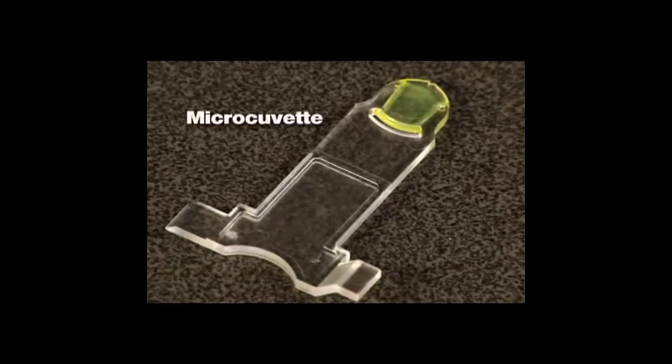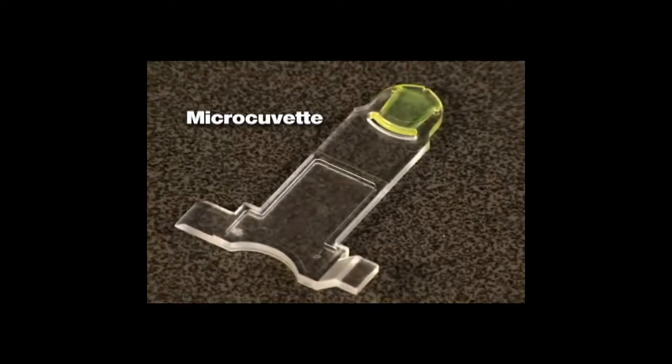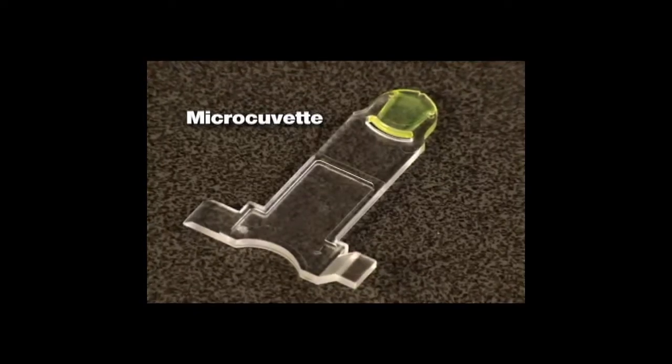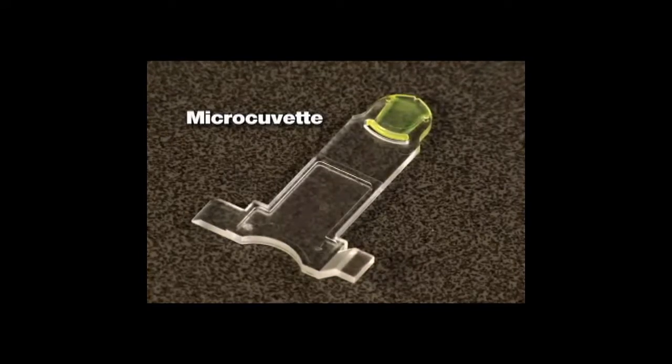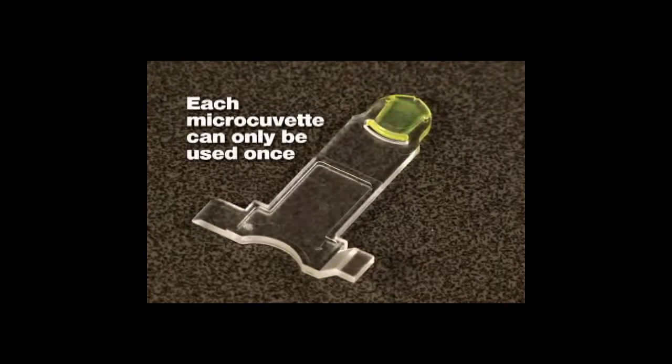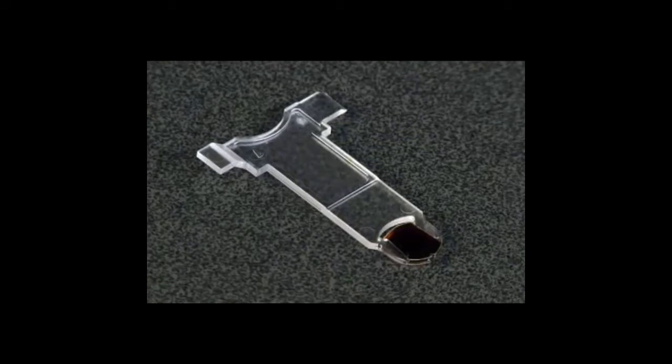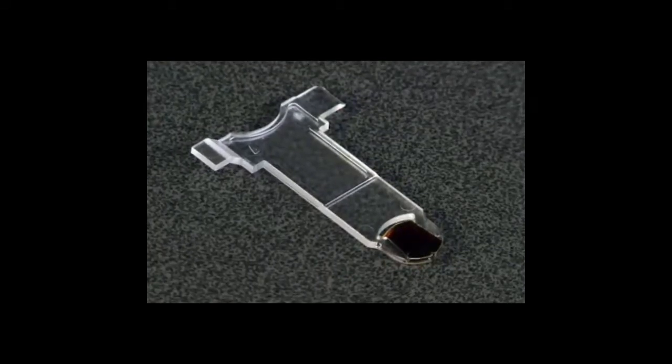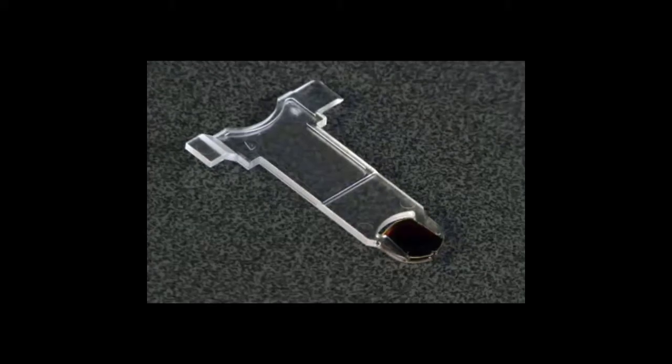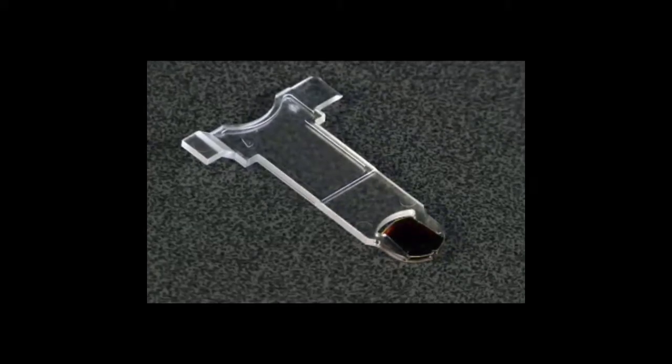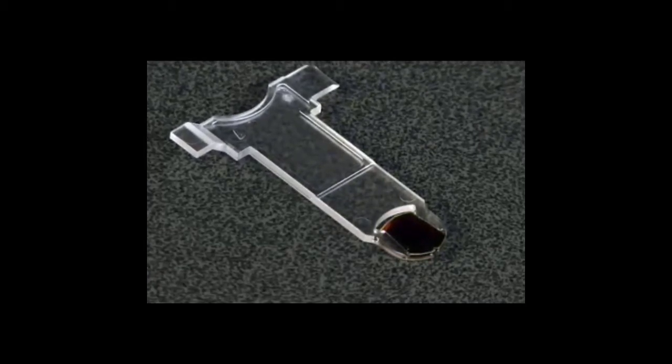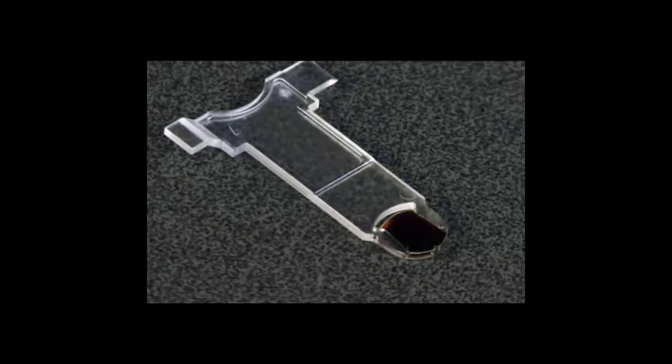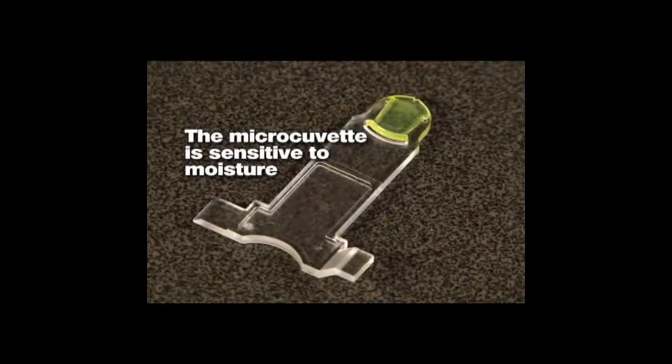The micro-cuvette is the most sensitive component of the Hemopoint H2 system. Please take care to handle the micro-cuvette carefully and pay particular attention to the following conditions. The micro-cuvette is designed for single use, so each micro-cuvette can only be used once. The micro-cuvette is coated during manufacturing with all the reagents necessary for determining the hemoglobin concentration in the blood sample. As soon as the blood is taken into the micro-cuvette, a reaction occurs within three minutes. Normally a test is completed between 30 and 45 seconds. The micro-cuvette is sensitive to moisture.